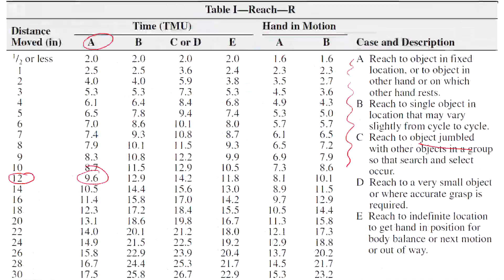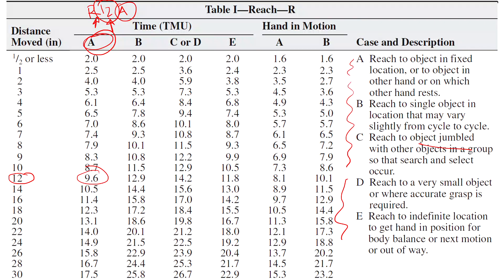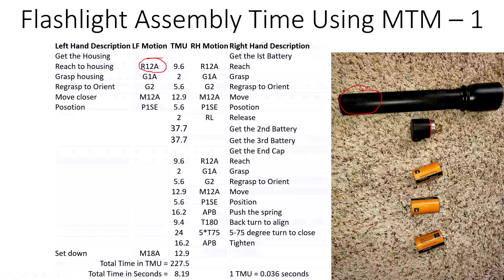Looking at the reach table: R12A means R for reach, 12 for 12 inches, and A for the category A type of reach. The flashlight housing is in a fixed location — a very simple reaching situation, not jumbled together, very easy to reach. So the timing for that would be 9.6 TMU — reach 12 inches, category A, value 9.6.